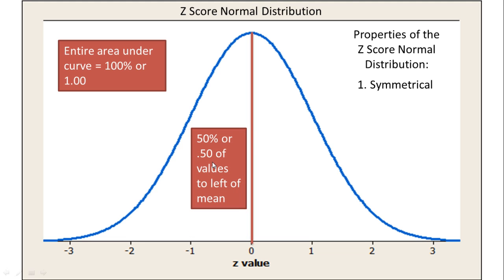then 50%, or 0.50, of the values occur to the left of the mean, and 50%, or 0.50, of the values occur to the right of the mean. In other words, that line splits the distribution exactly in half because it's symmetrical.